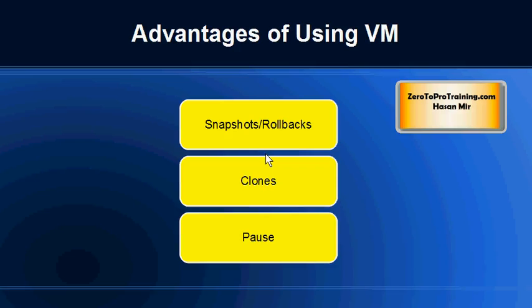Once we have downloaded the appliance, we are going to import it into the virtual machine software. There are a few advantages of using a virtual machine as opposed to directly installing Linux on bare hardware. You can easily take snapshots and roll back to previous snapshots — if something goes wrong with your Linux OS, you can roll back to the last snapshot. You can also take clones: create a copy of your OS to experiment with, without disturbing your current environment.